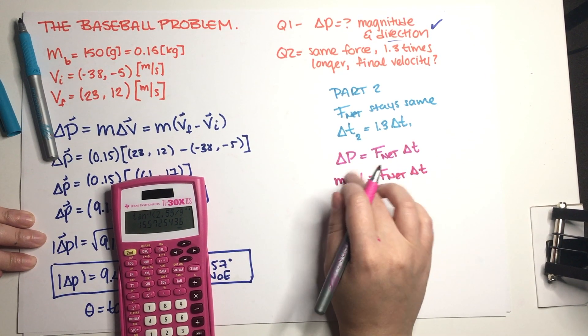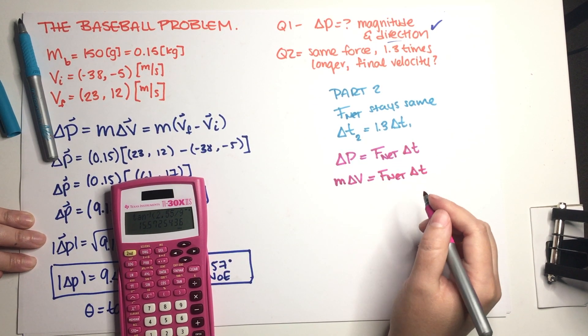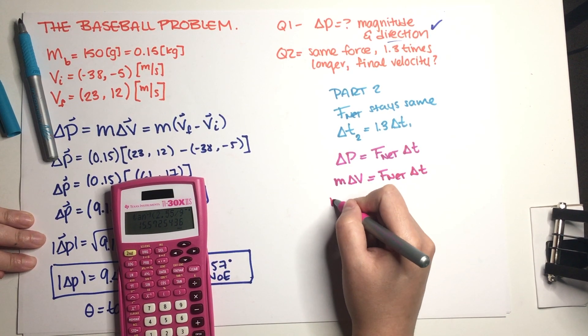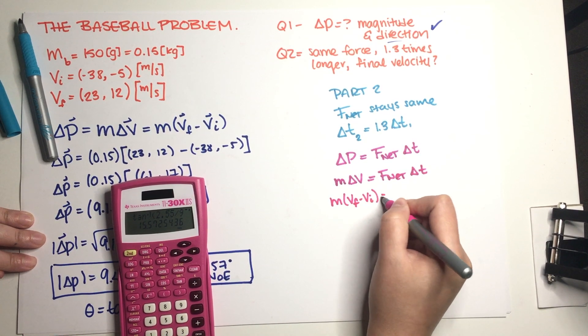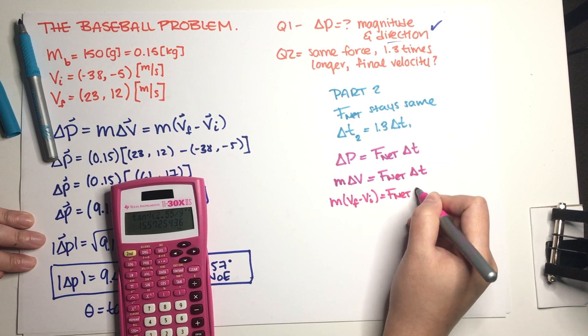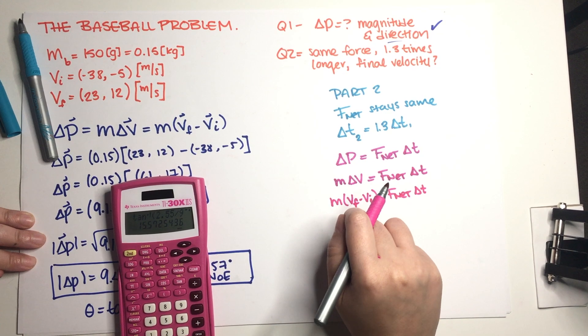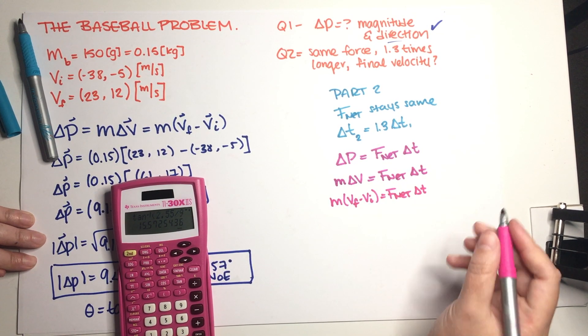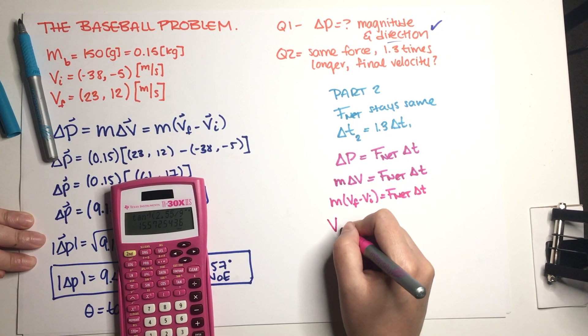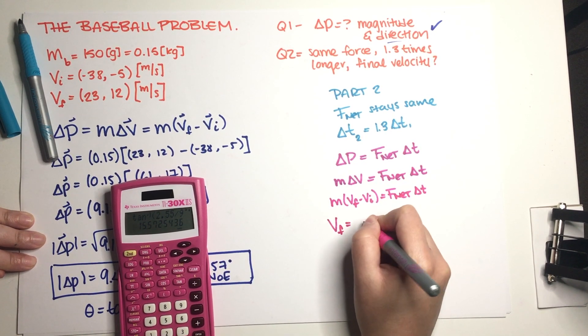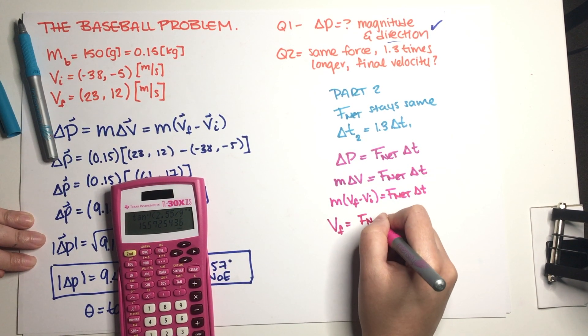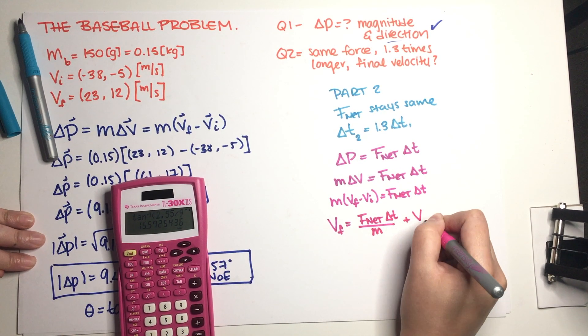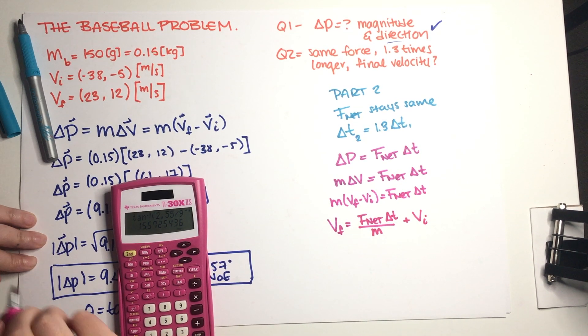Like this. Now we have delta v over here which is final minus initial, so let's just spread that out. And we want the new final velocity, so I'm just going to go ahead and solve for delta v_f over here. There we go, there we go.